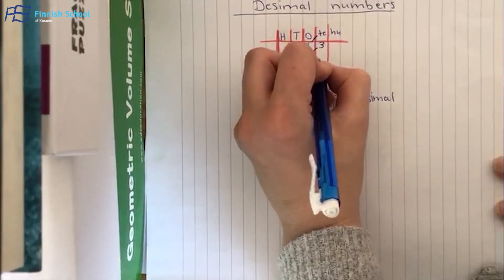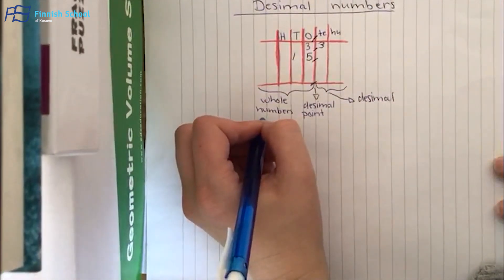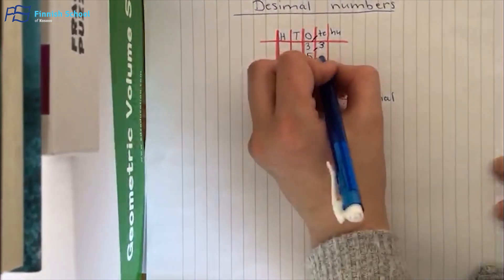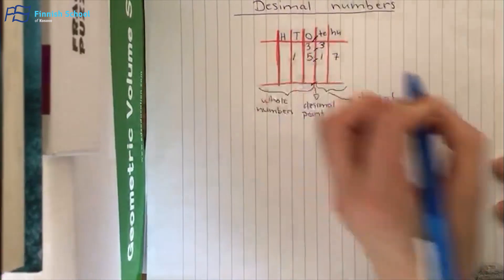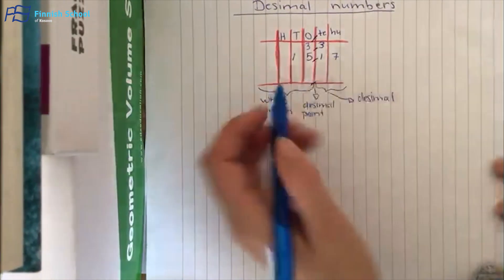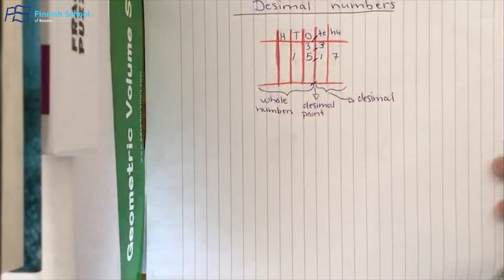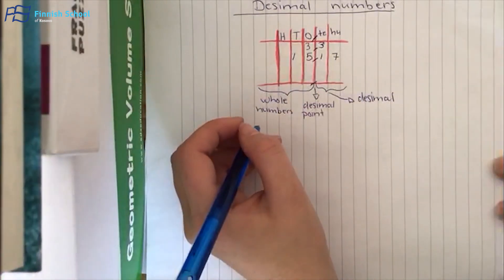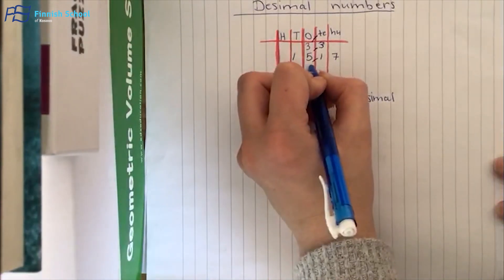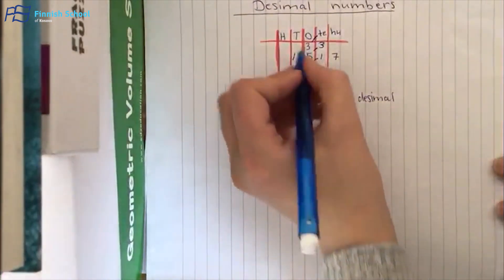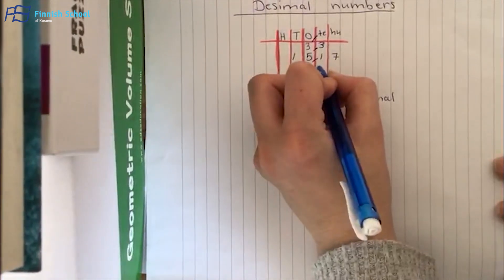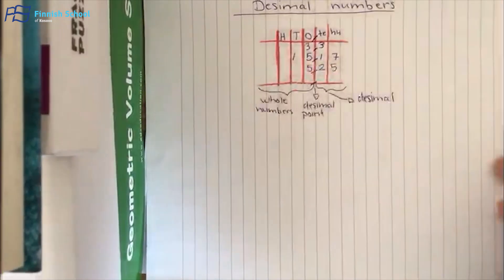Or if I have 15 wholes and 17 hundredths, I would mark it like this. Or I have five wholes and 25 hundredths.